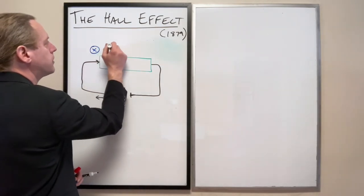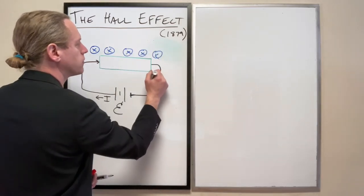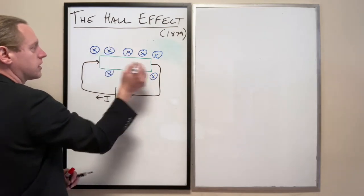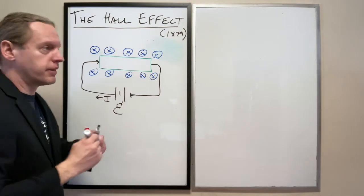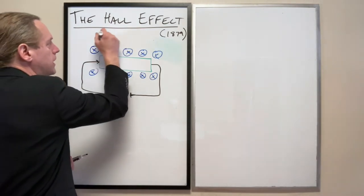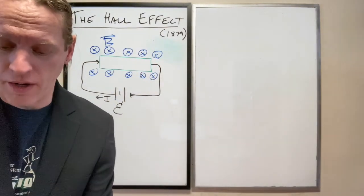So we're going to have some magnetic field that points into the board at all directions here. And now within the conductor as well. I'm just not drawing it there so we can see the path of the hypothetical particles.